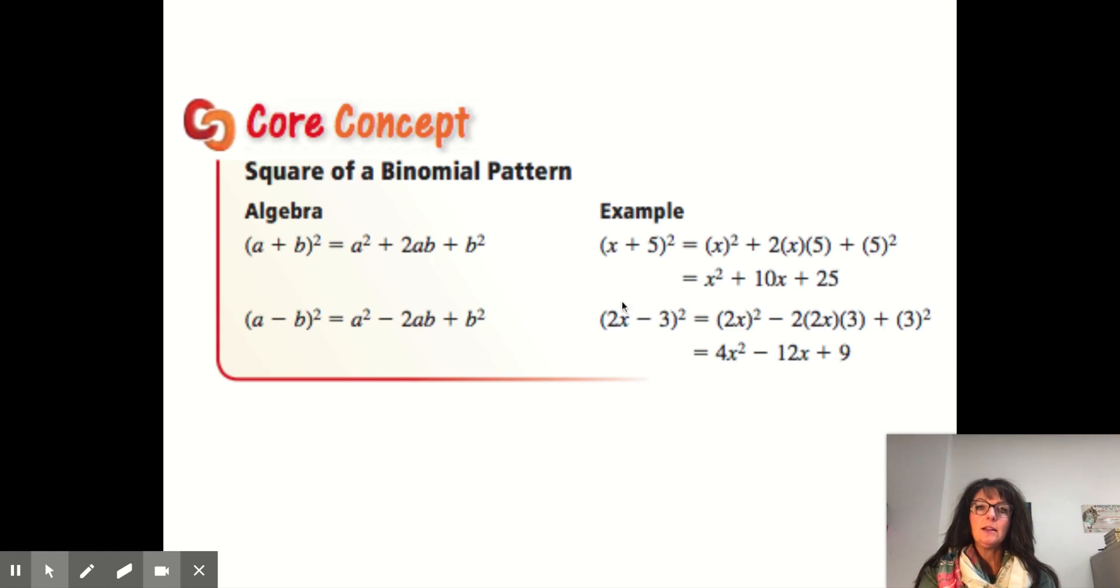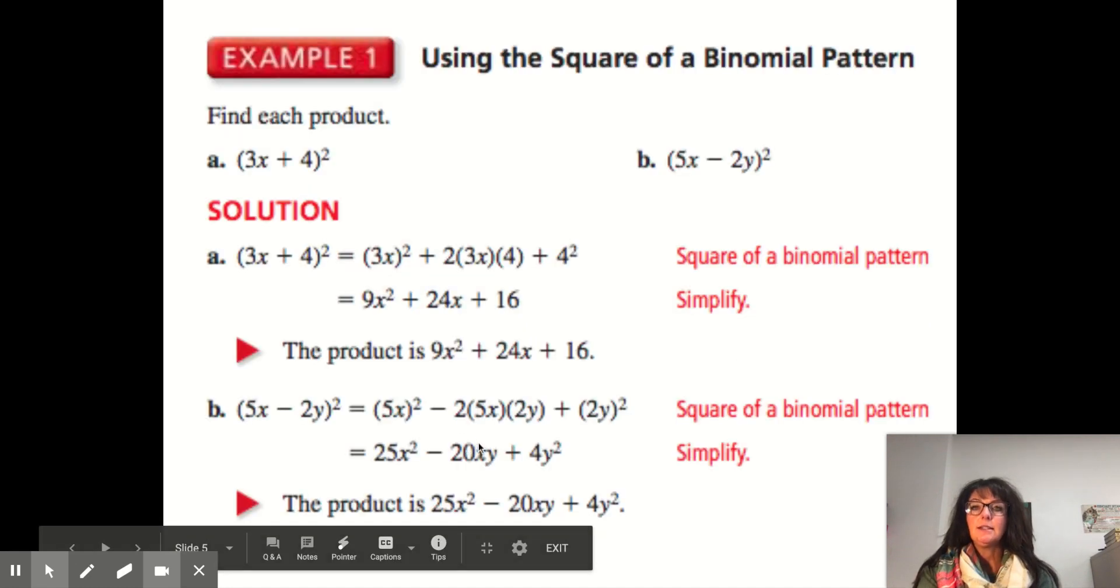In the subtraction model, now you're going to count this 2x as the entire term of a. So you'll have (2x)², and remember with the exponent rules, 2² times x² becomes 4x². Then you have 2 times a times b, so 2 times 2 times 3 times x behind subtraction. And then you have this 3 squared, which is 9.